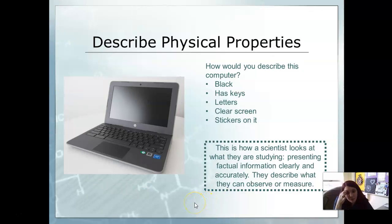When describing physical properties, what can we use to describe this computer? We can see it's black, it has keys, letters on it, a clear screen, and stickers on it.